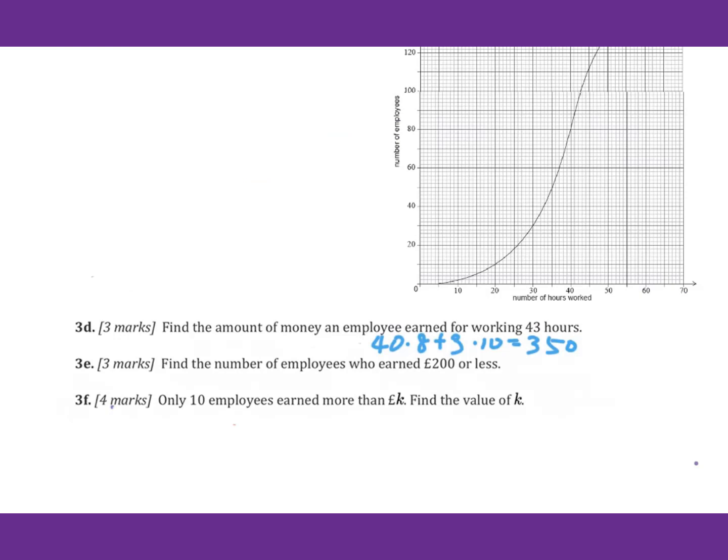Find the number of employees who earned 200 pounds or less. So we use 200 divided by 8, you will get 25 hours. You will find that 25 is here. That will be 18, because for the scale on the y-axis, that is 2 for each unit.